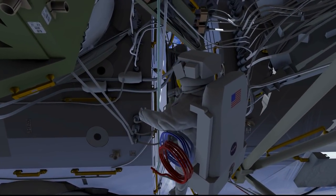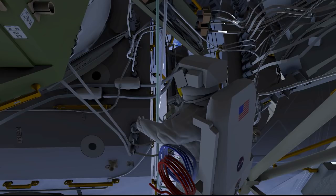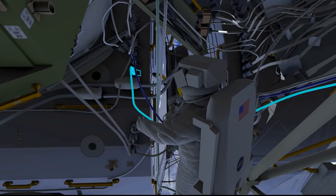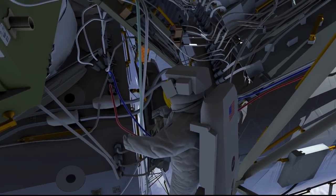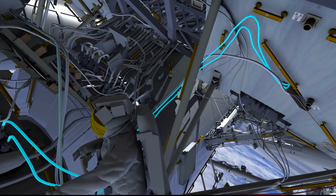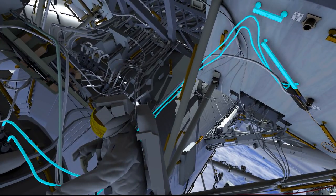Now, EV2 will work from the zenith side of Node 1, directly above EV1. EV2 has a longer set of jumpers that will run from the forward side of Node 1 routing into the S0 truss through the MLI, where he will temp-stow those for EV1 to pick up later. EV2 will wire tie them along handrail to keep them out of the way of any future EVAs.